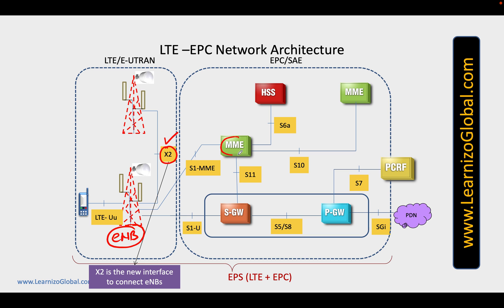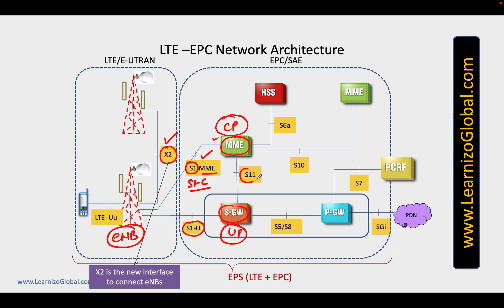The MME typically takes care of the control plane part, and the SGW typically takes care of the user plane part towards the radio network. They are connected via the S1 interface — referred to as S1-MME for the MME and S1-U for the user plane. In some documents you will also see the interface name S1C. The MME controls the SGW via an interface called S11.